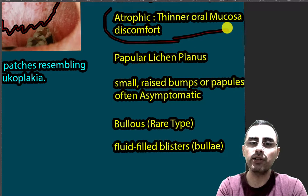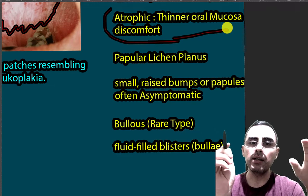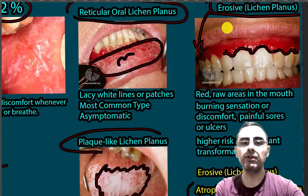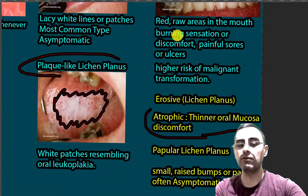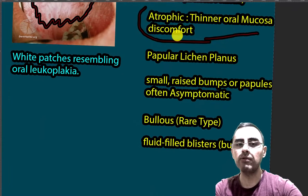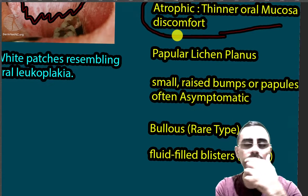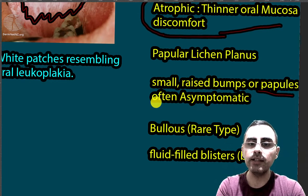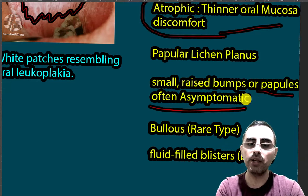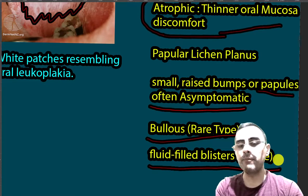We also have three other types. Atrophic lichen planus is characterized by thinner oral mucosa and causes discomfort — it is somewhere between the reticular form and the erosive form. Papular lichen planus is characterized by small bumps inside the mouth; they are usually small, multiple, and typically asymptomatic. Finally, bullous type is a rare form characterized by fluid-filled blisters called bullae.